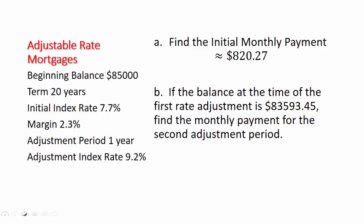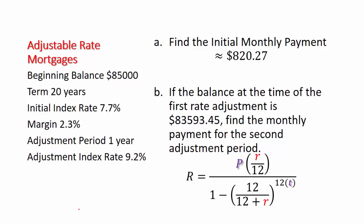And we're going to use what we know about the new interest rate to calculate what would be the new payment. We're using the same formula, except we have some adjustments to make. Our new interest rate is going to be based on the index rate of 9.2% plus our margin of 2.3%, which is an 11.5% interest rate.